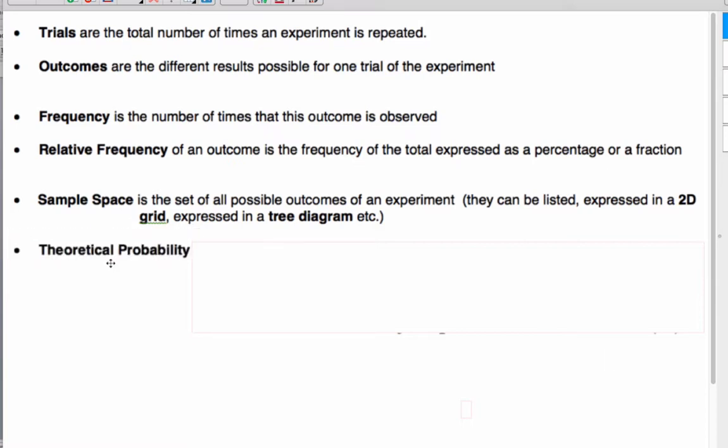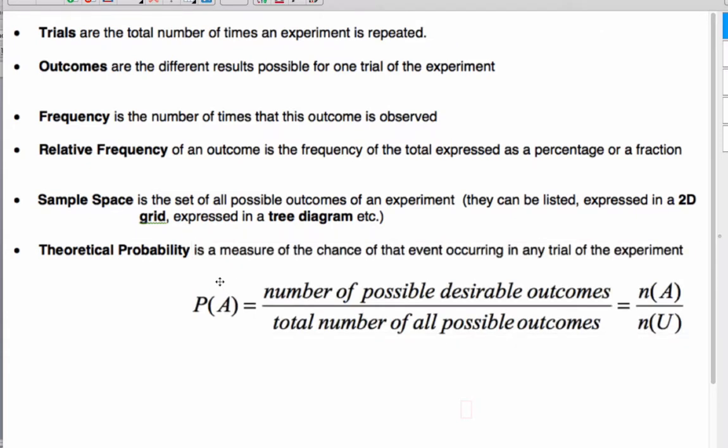And then we have our theoretical probability. That's what should happen on theory. And that's as if you take all the possible numbers, successes, desirable outcomes, over the possible outcomes. That gives you your theoretical probability.